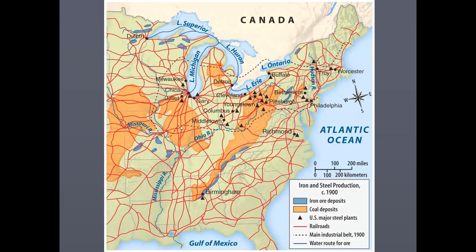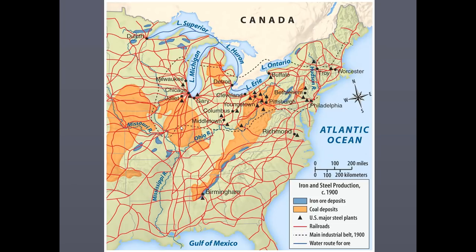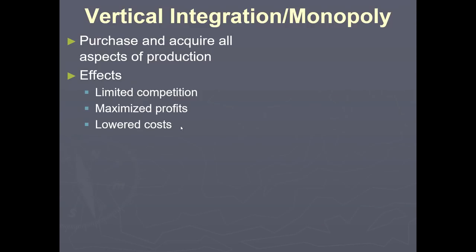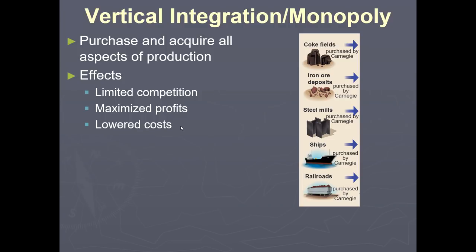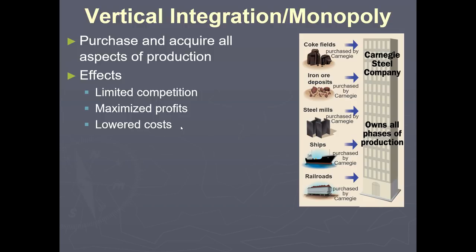Here's a map showing where most of the coal and iron are located in the United States — businesses thrived in that area, and that's the Rust Belt. This region is focused on whenever elections come up and job opportunities are discussed, because these are the factory workers who want those factories to stay open. Returning to vertical integration and monopoly: Carnegie purchased and acquired all aspects of production — from coal fields to extraction of iron ore, putting them in steel mills, on ships, and through railroads. Carnegie owned every aspect from ground to sale — that is vertical integration.